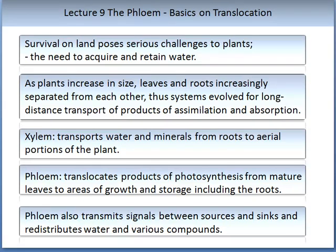For plants, survival on land poses serious challenges. They need to acquire and retain water. As plants increase in size, leaves and roots become increasingly separated from one another, and so systems evolved for long-distance transport of assimilates and absorbed compounds. The xylem transports water and minerals from the roots to the aerial portions of the plant, while the phloem has a different function: it transports products of photosynthesis from mature leaves to areas of growth and storage including the roots. The phloem also transmits signals between sources and sinks and redistributes water and various compounds.